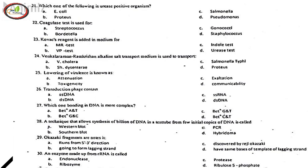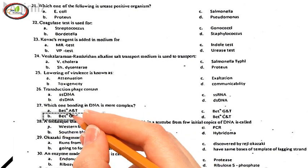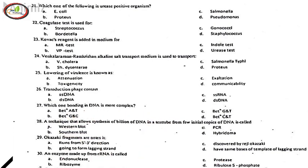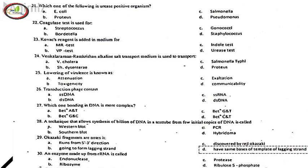27. Which one bonding in DNA is more complex? B. GC bond. 28. A technique that allows synthesis of billions of DNA in a test tube from few initial copies of DNA is called, C. PCR. 29. Okazaki fragments are noted at, D. Same bases of template of lagging strand. 30. An enzyme made up from RNA is called, B. Ribozyme.